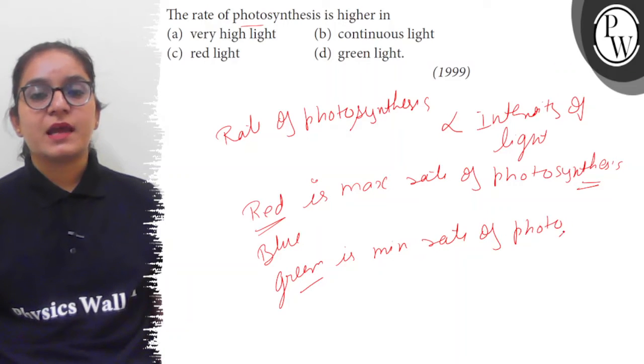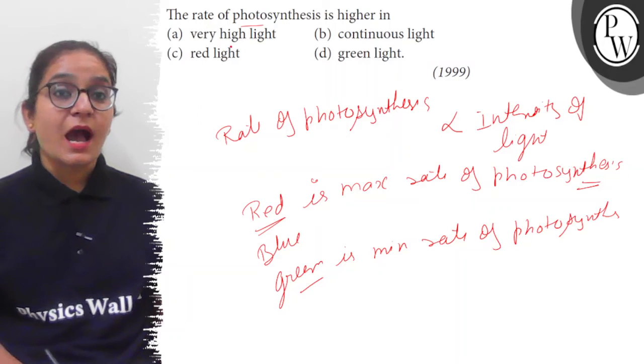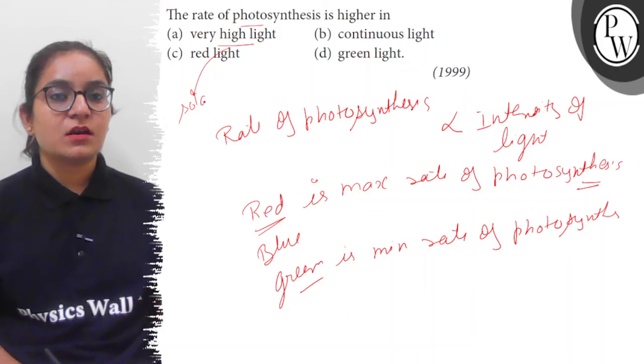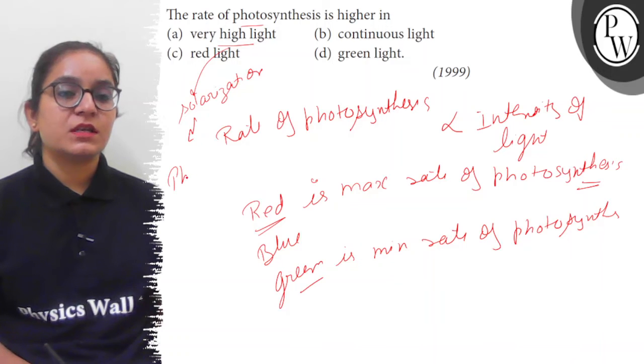If very high light intensity is given, the solarization phenomenon occurs. Solarization leads to photo-oxidation.